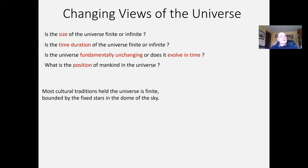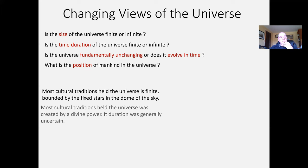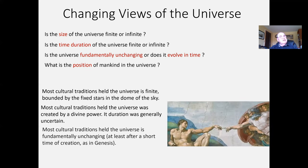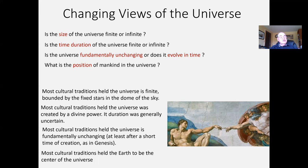Most cultural traditions held that the universe was finite, bounded by the dome of the sky — the celestial sphere, as it was called by the Greeks. Most traditions felt the universe was created by some kind of divine power and did have a start somewhere. Its duration was generally an open question. Most traditions held the universe is fundamentally unchanging, at least after a short creation period — very much like the Genesis story. And most traditions certainly held that the Earth was the center of the universe.